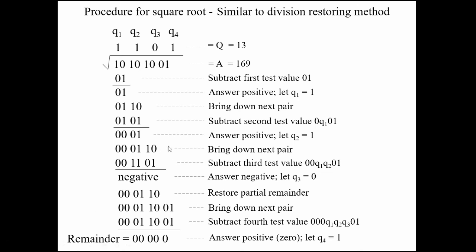Since 169 is a perfect square, the remainder is 0 and Q = 1101 in binary, which equals 13. So 13 squared equals 169, confirming the result. Also note: A has 8 bits (K = 8) and Q has 4 bits (K/2 = 4), consistent with our earlier rule. This was all about the square root algorithm.